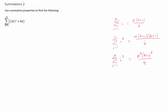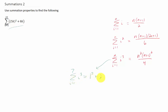We are going to find this sum right here using these properties. In case you're wondering what these properties mean, let's take one for example. Let's say we have a sum of i cubed from i equals 1 to 7. What that means is 1 cubed plus 2 cubed all the way to 7 cubed.